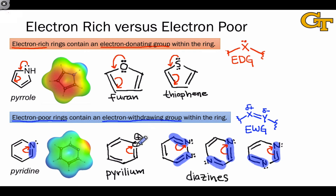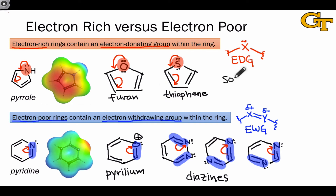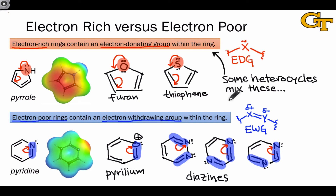To summarize: electron-poor rings can be identified by the electron-withdrawing groups within their structures. When we say electron-withdrawing group, we're using the definition of a resonance-withdrawing group seen previously in discussions of conjugated dienes and substituted benzenes. Electron-rich rings can be identified by the presence of electron-donating groups — specifically resonance-donating groups — within their structures, as also identified in discussions of conjugated dienes and substituted aromatics. Some heterocycles containing multiple heteroatoms can contain both electron-donating and electron-withdrawing groups, and in cases like this it can be difficult to tell whether the ring is electron-rich or electron-poor overall, since the heteroatoms are having opposite effects.